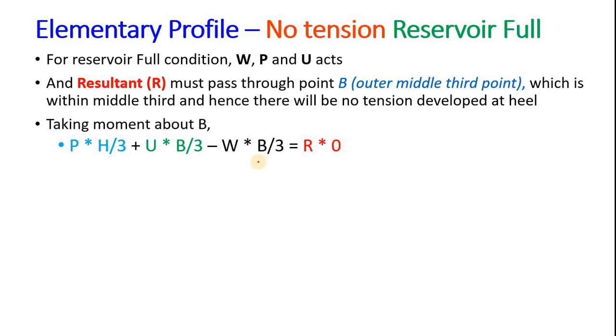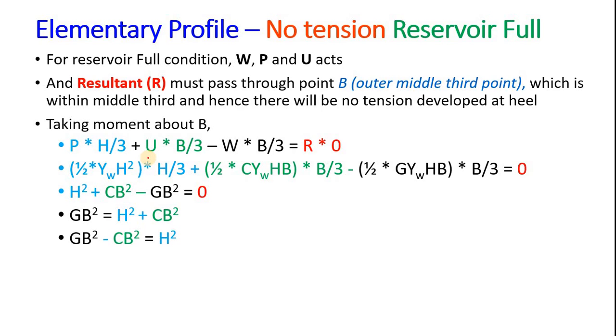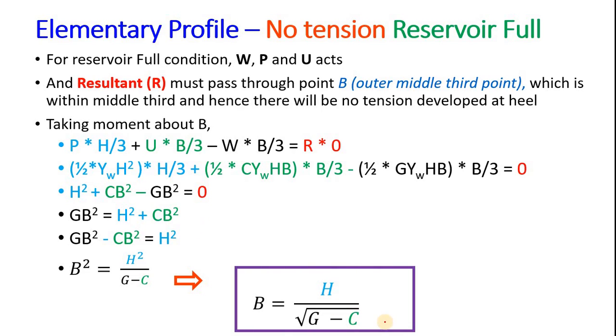Taking moment about B, only W is negative, others are positive because they are clockwise. After substituting these values, we will get one relationship: B equals H divided by square root of G minus C. This C is the coefficient of uplift and G is the specific gravity of the material.